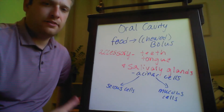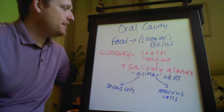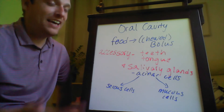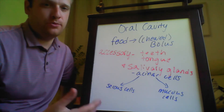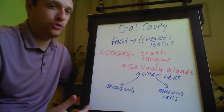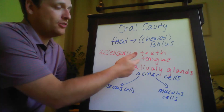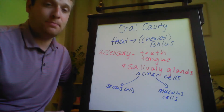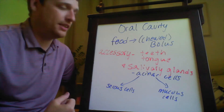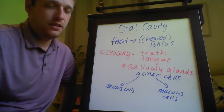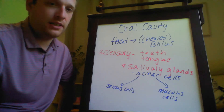Starting with the oral cavity — the first place food enters the alimentary canal — its primary purpose is to take food in, chew it up, and create a bolus of food, which is the chewed solid mass you eventually swallow. In addition to chewing, which involves both teeth and tongue for mechanical digestion, another important accessory organ in the oral cavity is the salivary glands. You have three of these, and they consist of a secretory cell called an acinar cell.